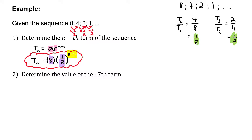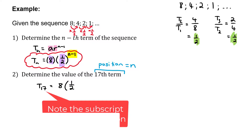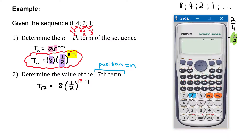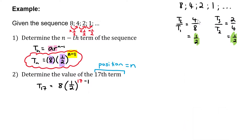The next part says: determine the value of the 17th term. Since we're looking at position 17, n equals 17. So T17 = 8 times (one half) to the power of 17 minus 1, which is (one half) to the 16th power. Working this out on a calculator gives one over 8192. That is the 17th term of the pattern.